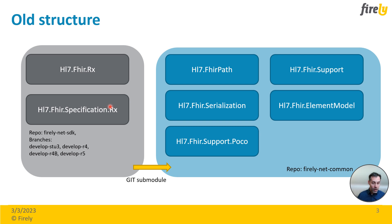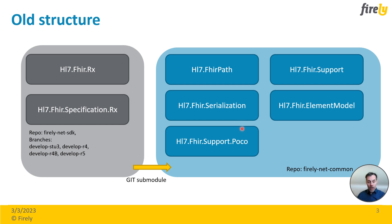We also have four flavors of the HL7 FHIR specification, and those packages provided functionality for validation, snapshot generation and so on. In the FHIR.NET common we had five packages which were FHIR-agnostic code — FHIR path, FHIR serialization, support.poco containing data types, support and element model. Those two repositories were connected with each other via the git submodule.